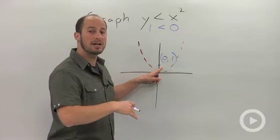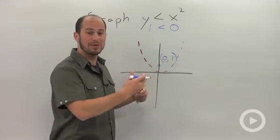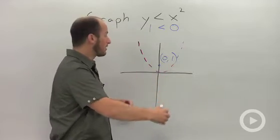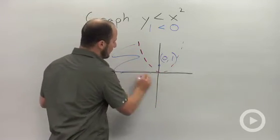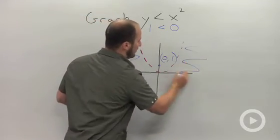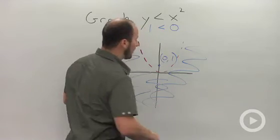So I shade the other portion. If I got a true statement, I would shade that side. False statement, shade the other. So what we end up with then is everything outside of this parabola.